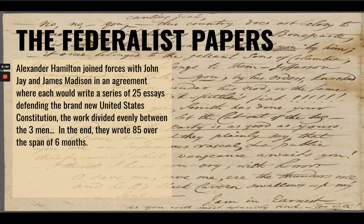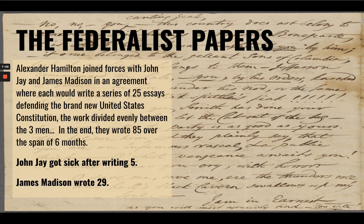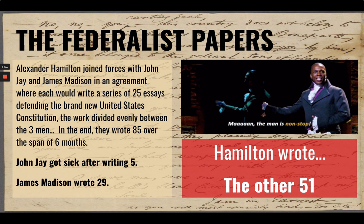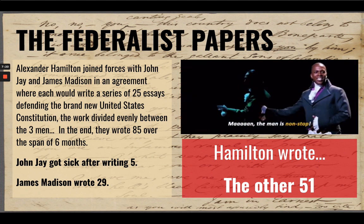The Federalist Papers: Alexander Hamilton joined forces with John Jay and James Madison, where each would write a series of essays defending the brand-new United States Constitution. In the end, they wrote 85 essays over the span of six months. John Jay wrote six, James Madison wrote 29, but Hamilton wrote the other 51 essays. The man is non-stop.